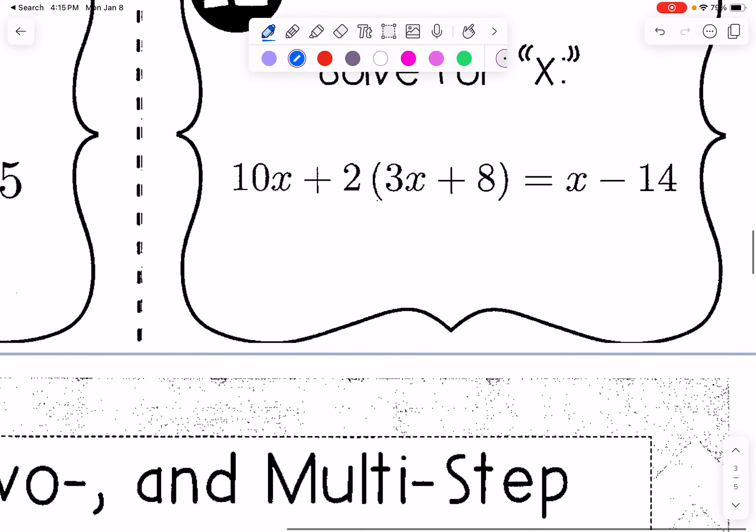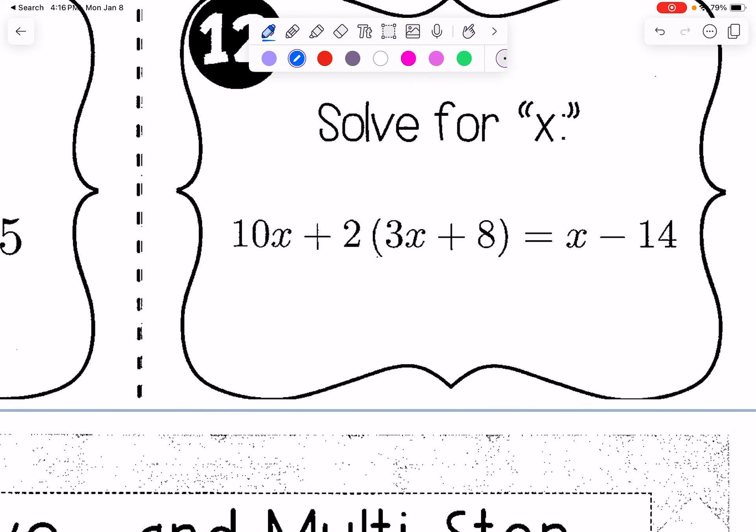So this time, remember, first we check to see if there's a distributive property we can expand. And I know that language doesn't exactly make sense. A more accurate way would be, is there any place that we can utilize a distributive property? So we have 2 multiplied by 3x is 6x. 2 multiplied by 8 is positive 16. Then equals x minus 14. So now we'll look, are there any like terms we can combine? We have like terms right here. So we combine that, get 16x plus 16 equals x minus 14.